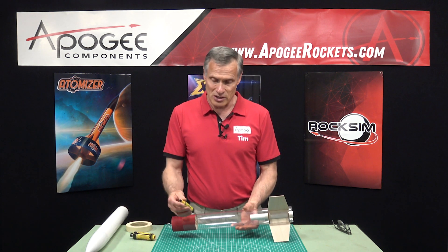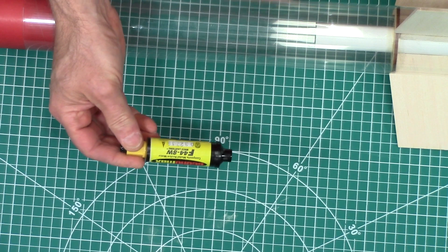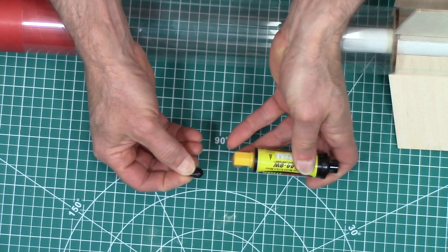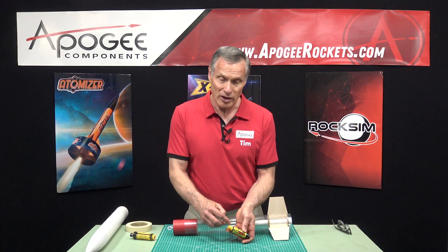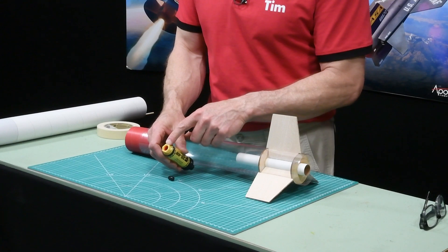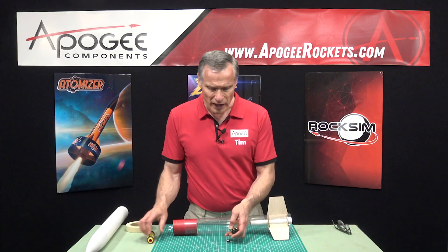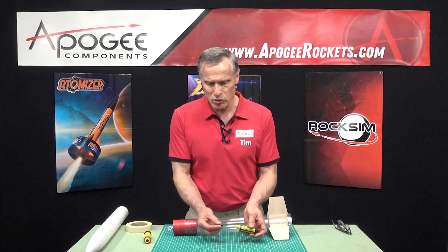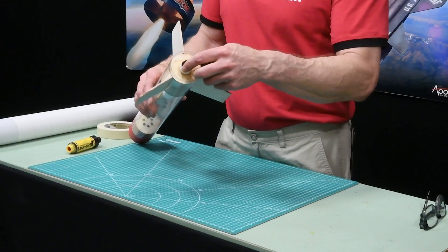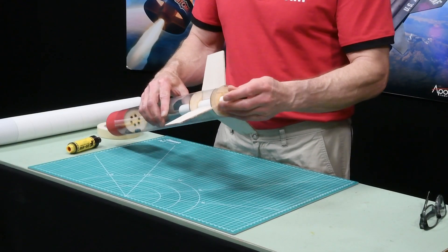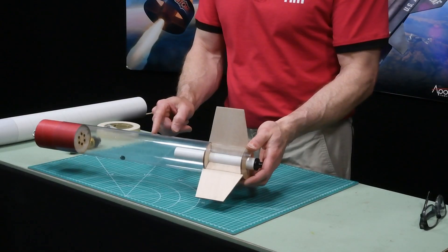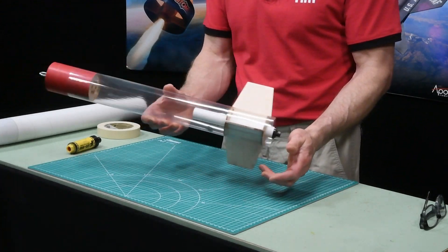But the problem is on the composite motors, Aerotech puts in this little plastic cap that holds the ejection charge in. Sometimes it's black and on this one here it's red. And when the ejection charge fires it pushes this cap out and it goes inside your rocket.